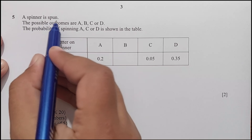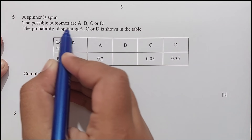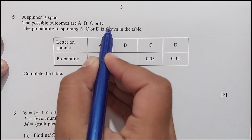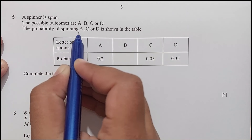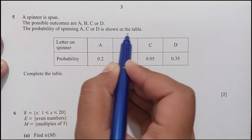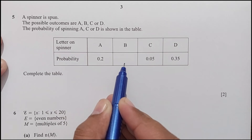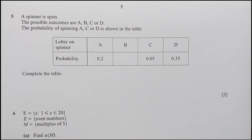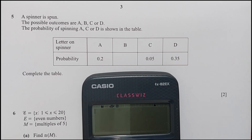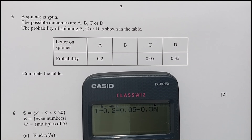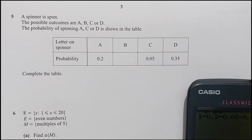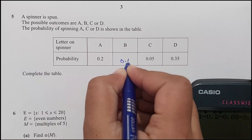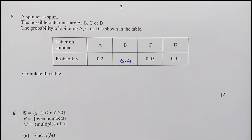Question number 5: a spinner is spun. The possible outcomes are A, B, C, and D. The probability of spinning A, C, or D is shown in the table. We find the probability for B since the sum of all probabilities equals 1. So 1 minus 0.2 minus 0.05 minus 0.35 equals 0.4. The probability for B is 0.4.